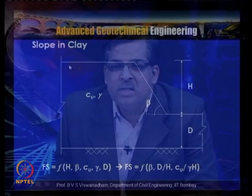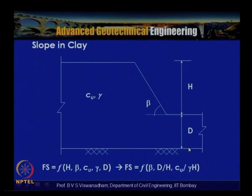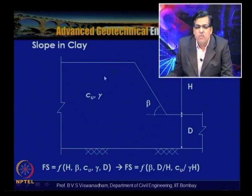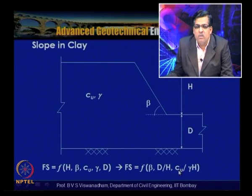Consider a slope in clay where we have c_u and gamma as soil parameters. Here d is the depth below the toe to the firm layer, h is the height of the slope, and beta is the slope inclination. The factor of safety is a function of h, beta, c_u, gamma. By using Buckingham's pi theorem or Rayleigh's method, we can write: factor of safety equals a function of beta, d/h, and c_u divided by gamma h.